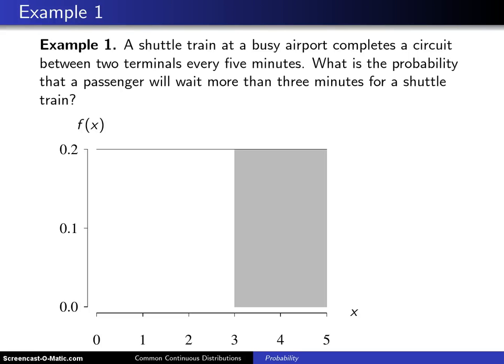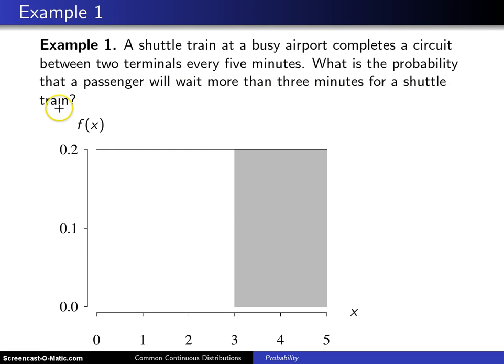Here is an example of applying the uniform distribution. A shuttle train at a busy airport completes a circuit between two terminals every five minutes. What is the probability that a passenger will wait more than three minutes for a shuttle train?